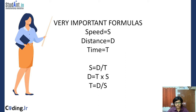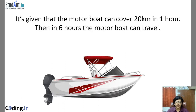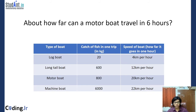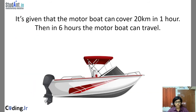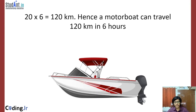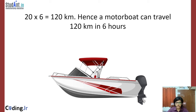Question number one: how far can a motorboat travel in six hours? The motorboat's speed is 20 kilometers per hour, meaning for every one hour the boat can travel 20 kilometers. We need to find the distance, so we use the formula: distance equals time multiplied by speed. Time is six hours and speed is 20 kilometers per hour, so distance equals 6 multiplied by 20, which is 120 kilometers. Hence the motorboat can travel 120 kilometers in six hours.